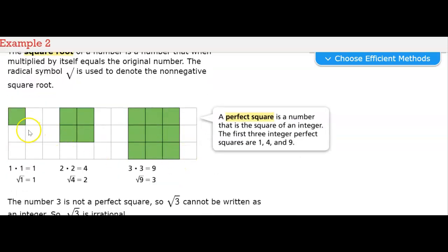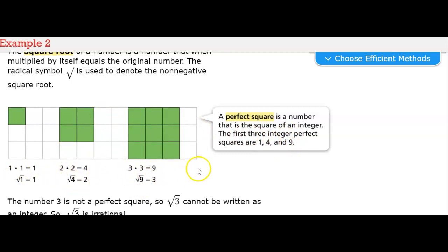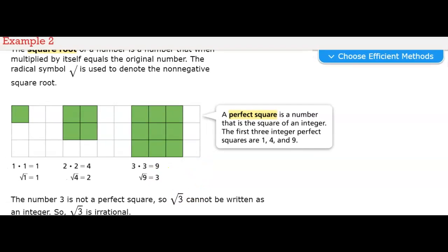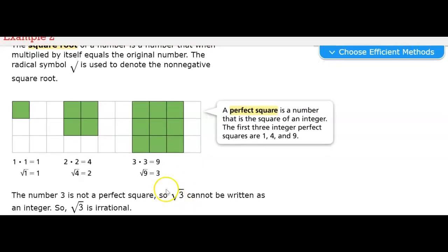So these are all perfect squares. A perfect square is a number that is the square of an integer. The first three integer perfect squares are 1, 4, and 9. The number 3 is not a perfect square. So the square root of 3 cannot be written as an integer. So the square root of 3 is irrational.